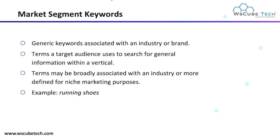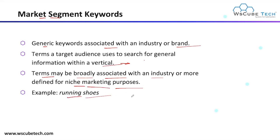First of all, we have targeting keywords. As the name shows, targeting means where you target any particular segment — where you target your customers, your product, any kind of brand, your competitor, or your geo-targeted keywords. In case of market segment, we can find keywords that are generic — keywords that associate with any industry or any brand. A target audience uses these to search for general information within a vertical. Example: 'running shoes' or 'sunglasses' — these are generic terms.